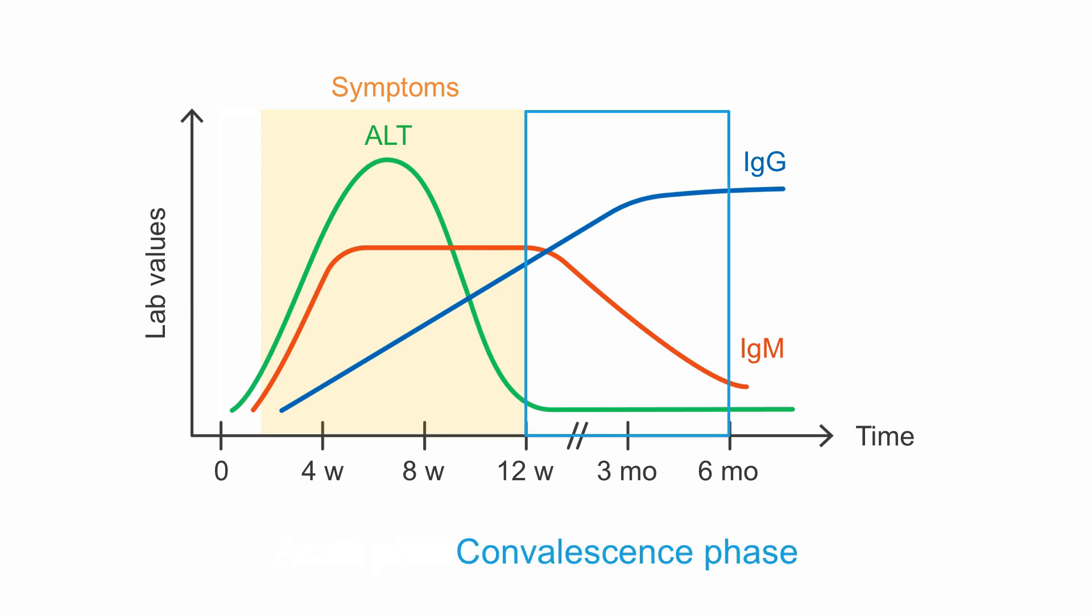Next, a convalescence phase with sinking IgM but still rising IgG levels. And finally a phase of long-term immunity when the infection is cleared, when IgM has dropped below the level of detection and IgG stays detectable. The long-term immunity phase actually indicates a past infection, but no active infection.